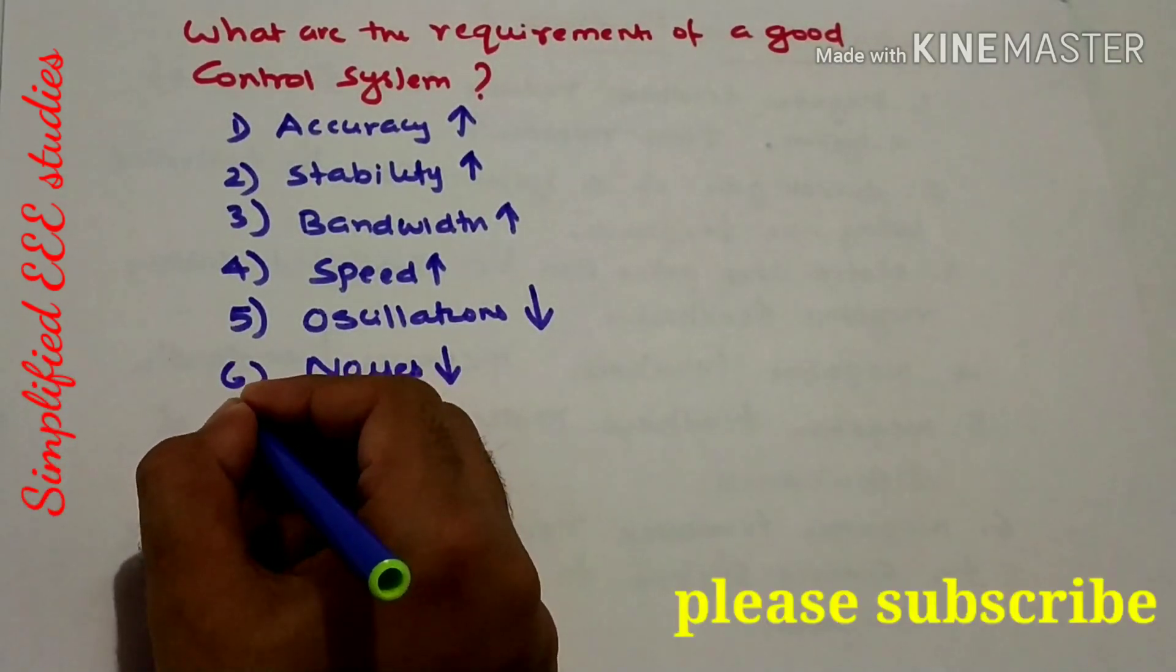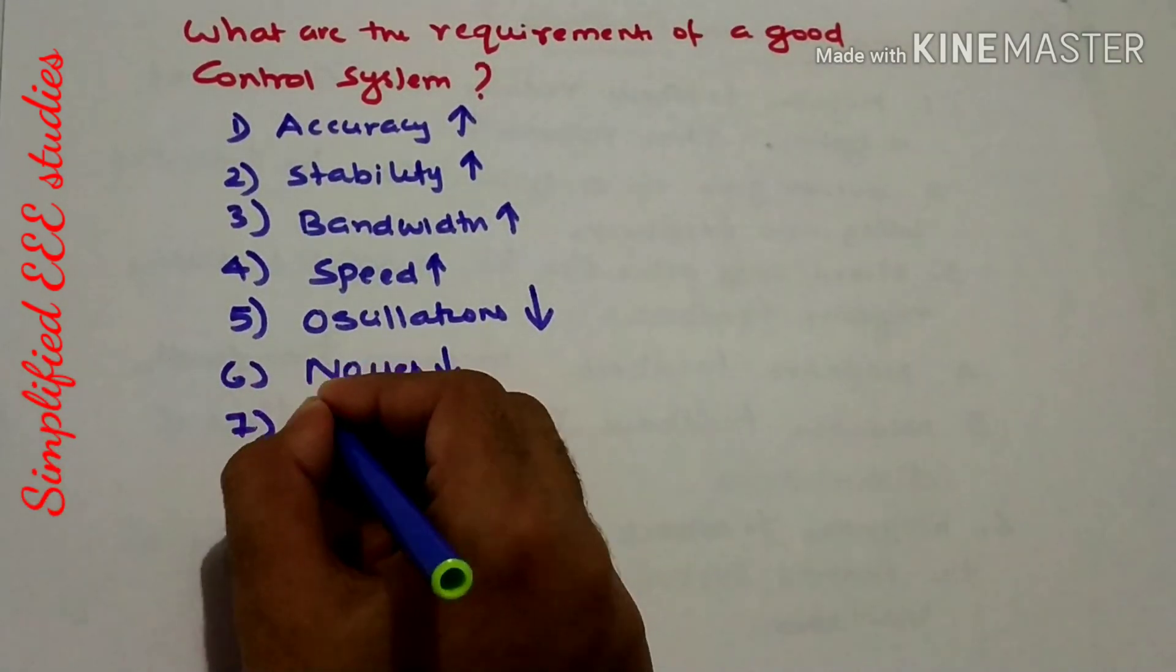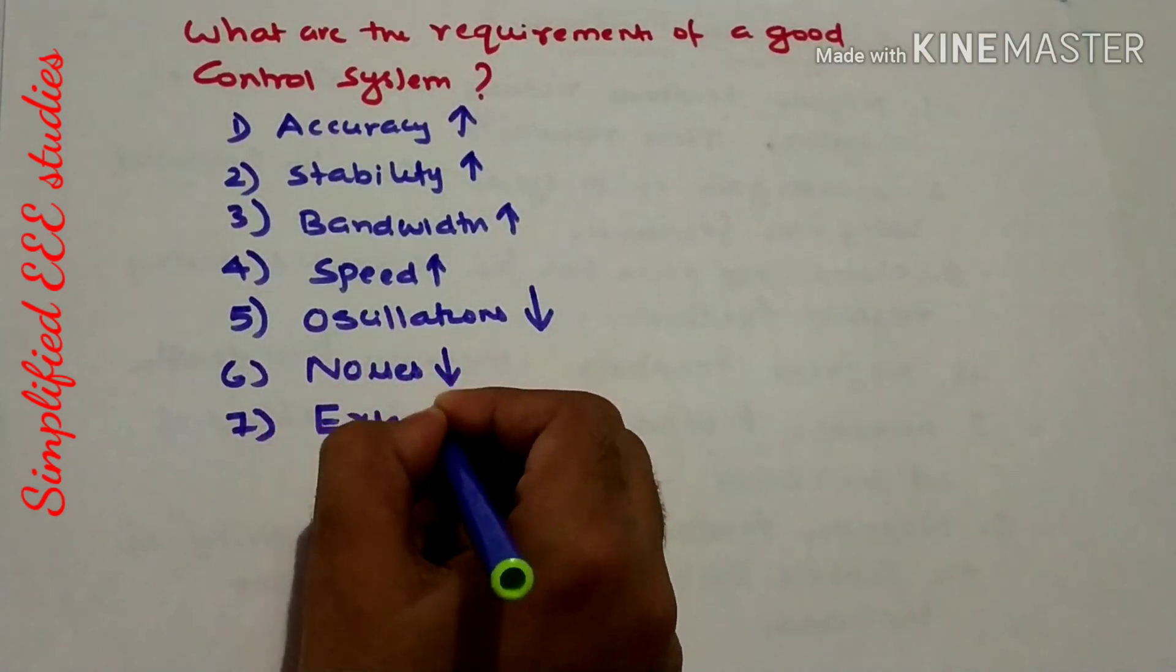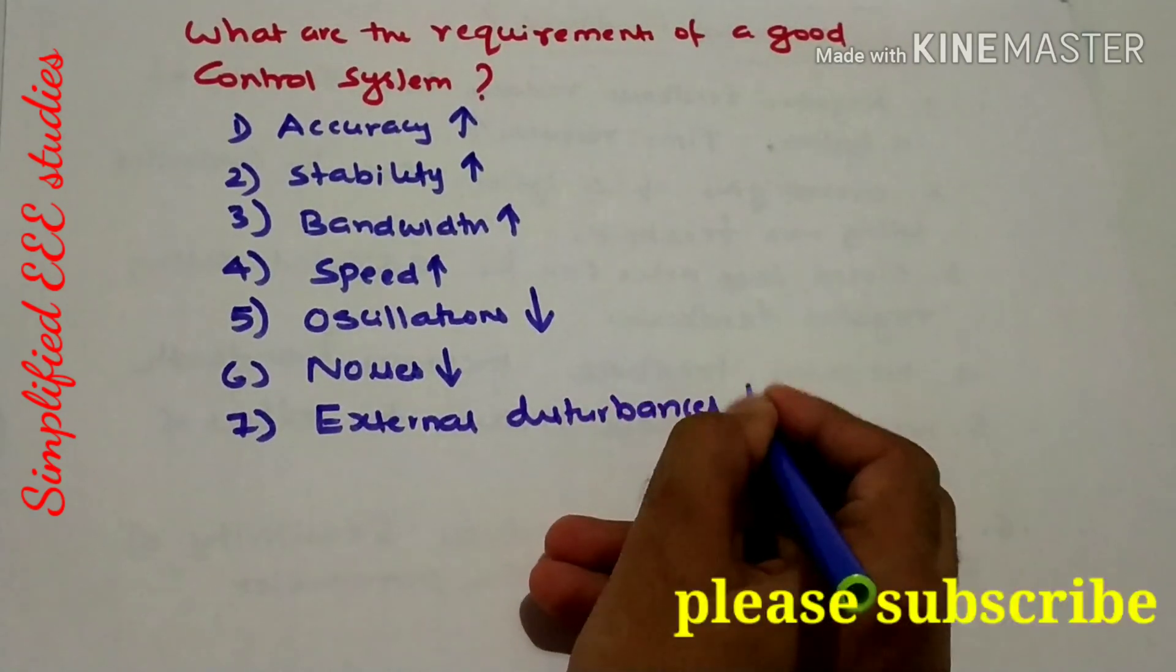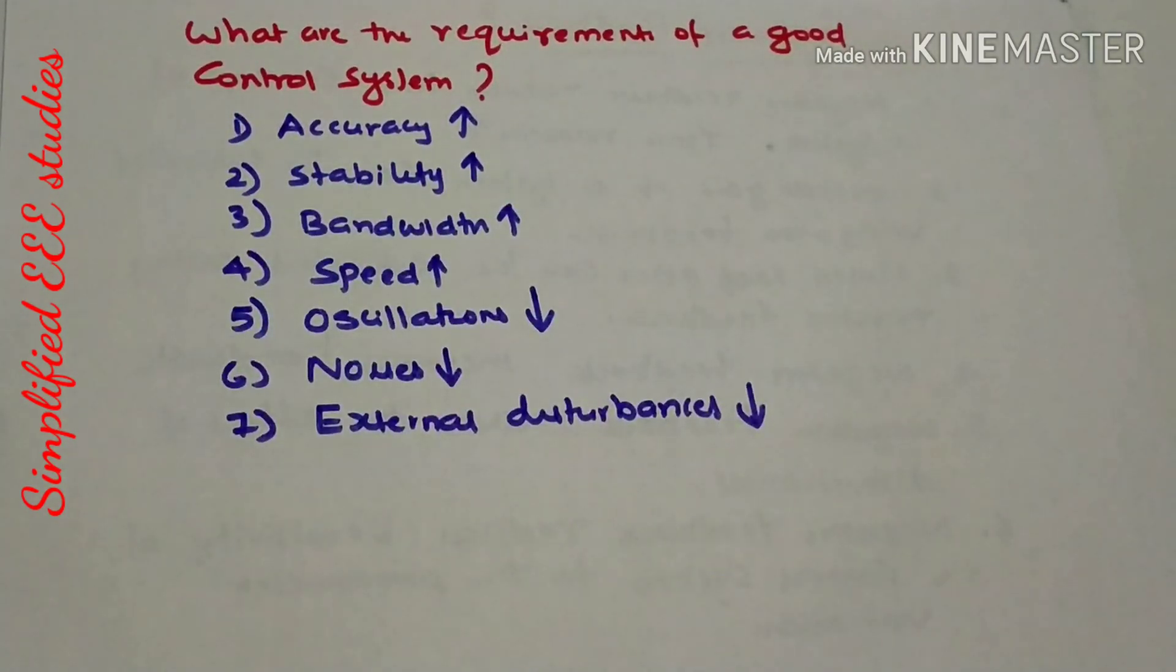Then external disturbance should be as minimum as possible. External disturbances should be as low as possible.